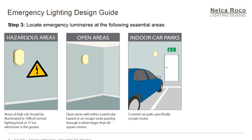Hazardous areas — areas of high risk — should be illuminated to 10 percent of the normal lighting level or 15 lux, whichever is greater. So there is a minimum of 15 lux, or at least 10 percent of the normal lighting level. If you are working in manufacturing facilities, those areas are sometimes classified as hazardous and you should meet this 10 percent or 15 lux requirement.